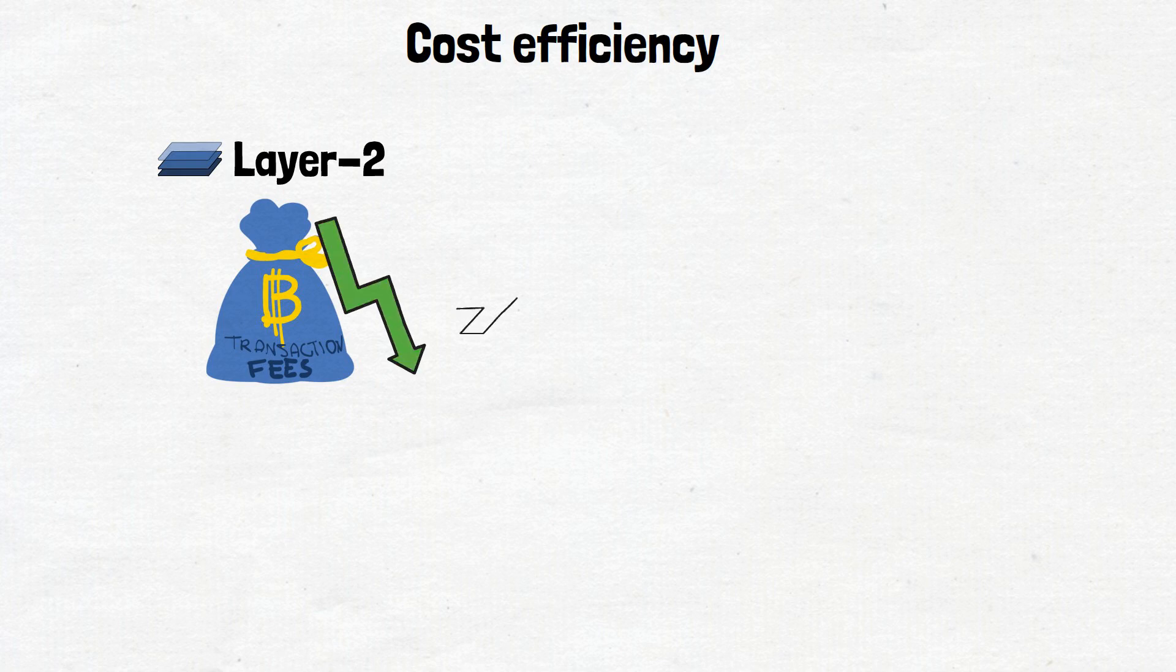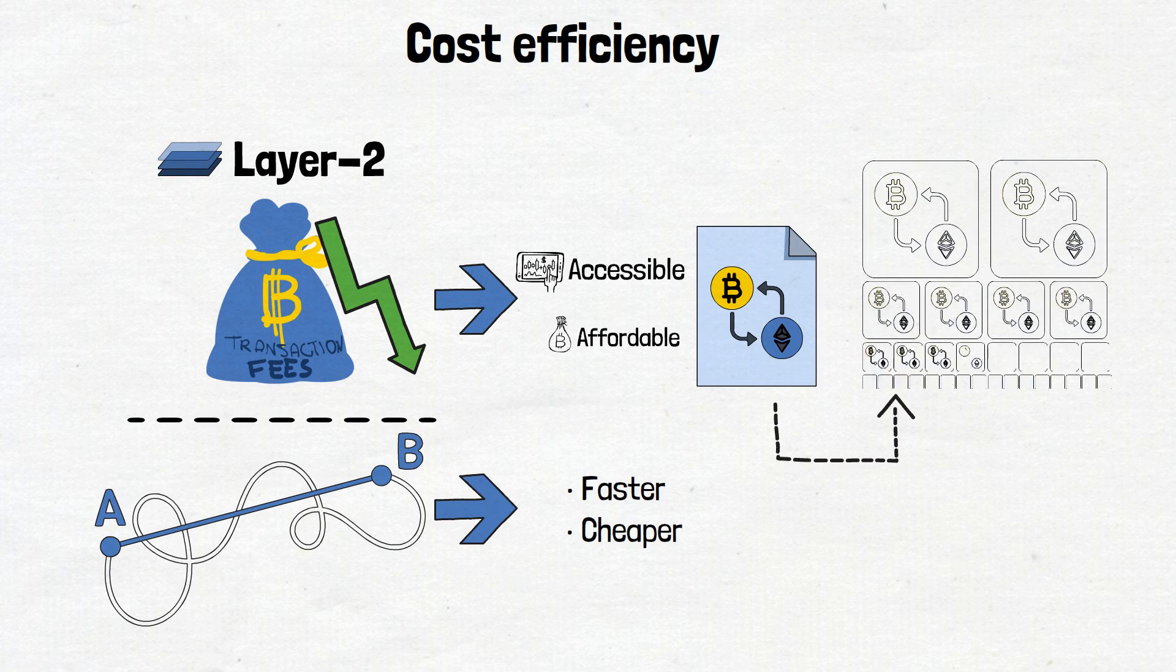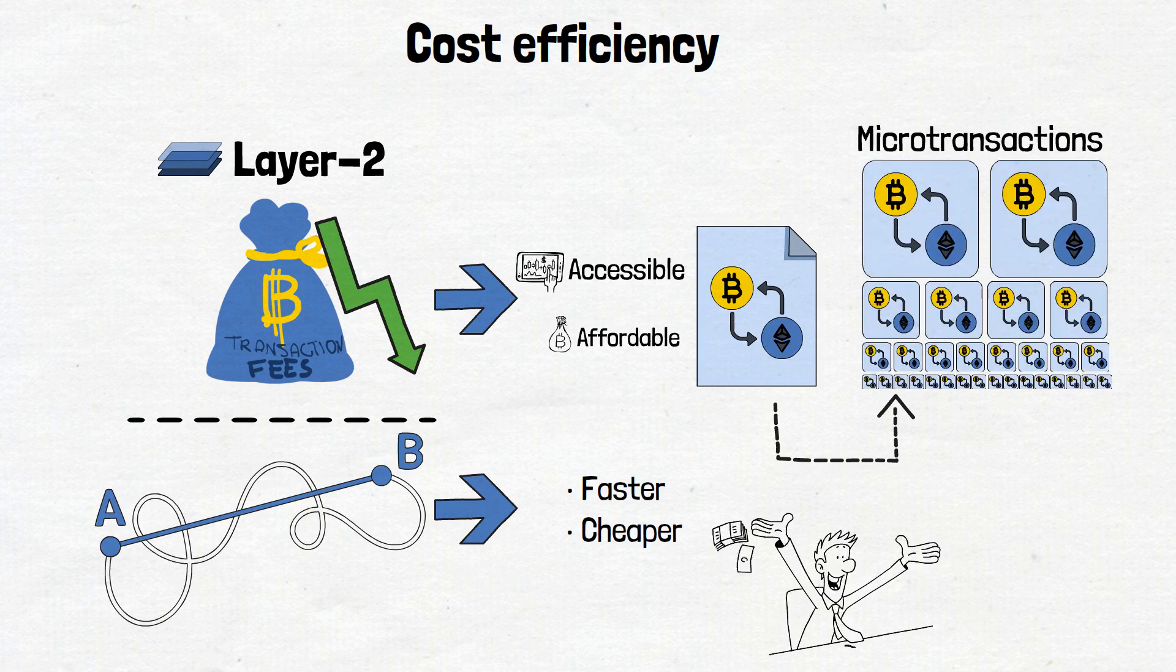Cost efficiency is another highlight. With Layer 2 solutions, transaction fees often take a nosedive. Lower fees mean more accessible and affordable transactions, akin to finding a shortcut that not only gets you to your destination faster, but also cheaper. This affordability opens doors for microtransactions and everyday use of cryptocurrencies, without worrying about hefty fees.